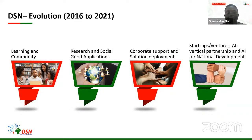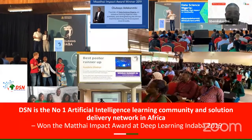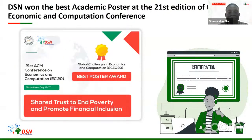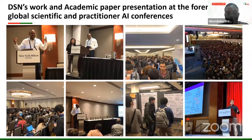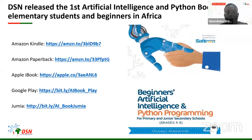We've had a lot of corporate support and solution deployment with big brands in the tech space, government space, and NGO space. We've also done startup partnership and national development. These are some of the awards we've gotten over the years — the Matia Impact Award 2019, and the DSN X Prize last year. Some of our work has been presented in the global space by our founder. We also have a book called the Beginner's Advanced Artificial Intelligence and Python Programming — one of the best materials to start with.